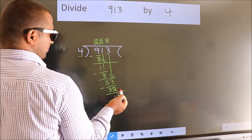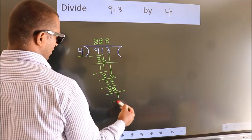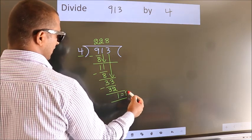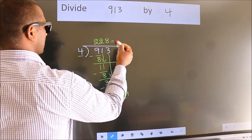No more numbers to bring down. So we stop here. This is our remainder. This is our quotient.